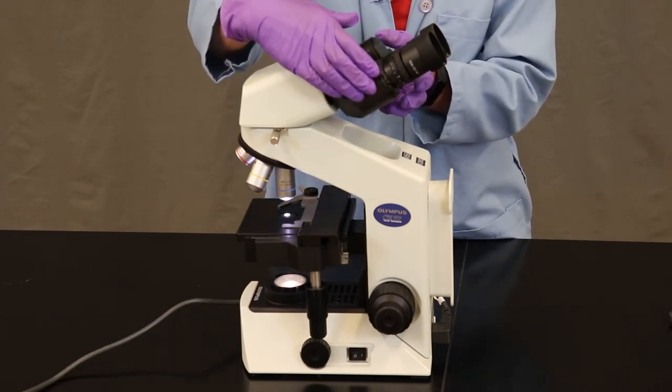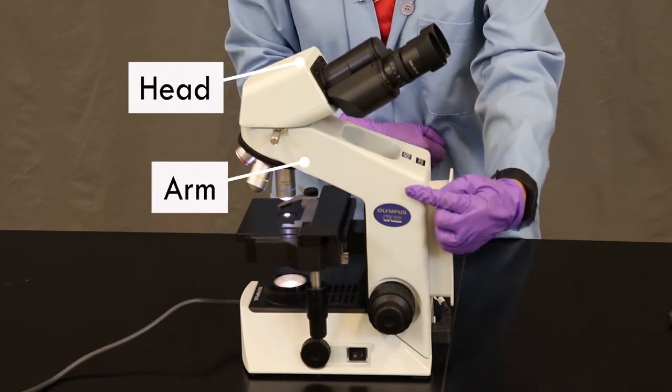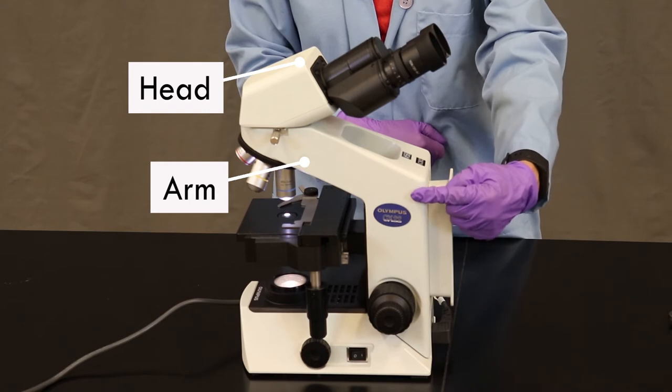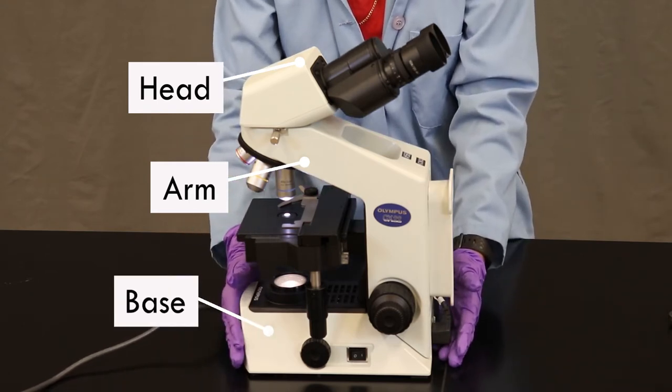This is the head of the microscope. This is the arm of the microscope that we help carry it by. And then we have the base of the microscope where it sits on the table.